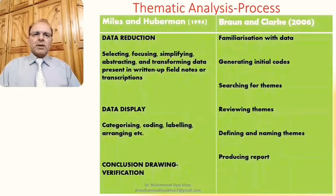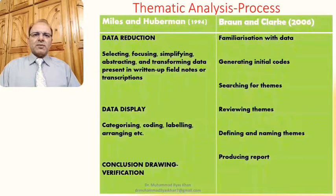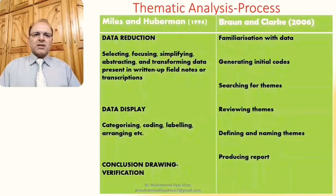The Miles and Huberman model is a very simplified and useful model of thematic analysis, which mainly has three stages. The first is called the data reduction stage. In qualitative research a large amount of data is generally collected, so the first thing the qualitative researcher needs to do is reduce it to the essential data needed to answer research questions. This involves selection, focusing, simplification, abstraction, and transformation of data present in written field notes or transcriptions.